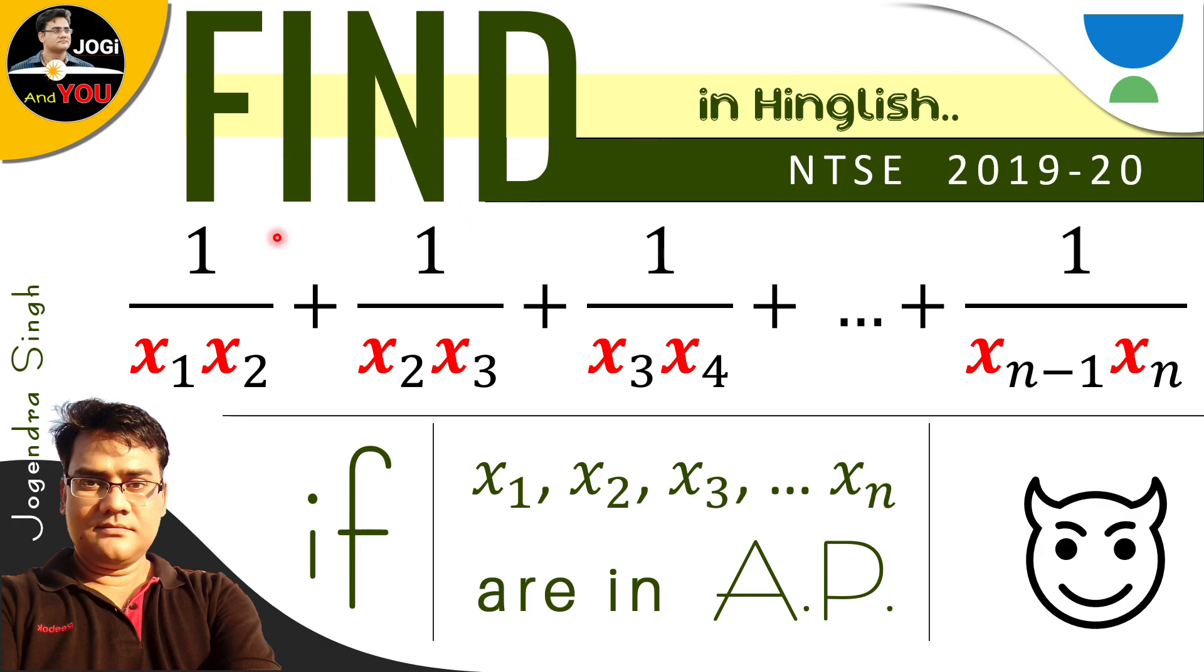According to this question, just find the value of this expression if x₁, x₂, x₃ and till xₙ are in AP. The question is: 1/(x₁x₂) + 1/(x₂x₃) + 1/(x₃x₄) + ... + 1/(xₙ₋₁xₙ). Find the value of this expression if x₁, x₂, x₃ till xₙ are in AP. So the question is a bit tricky. It's from NTSE 2019-20 and you know very well NTSE papers are a bit tough.